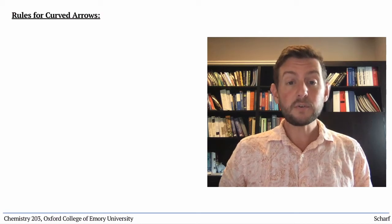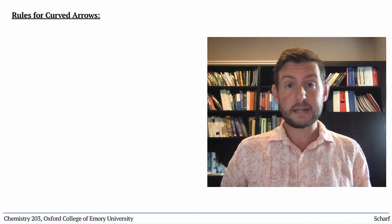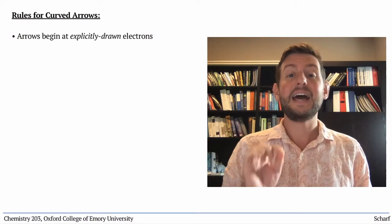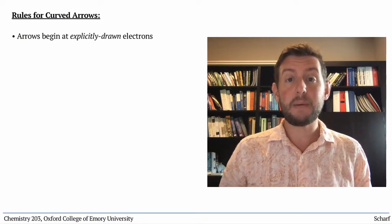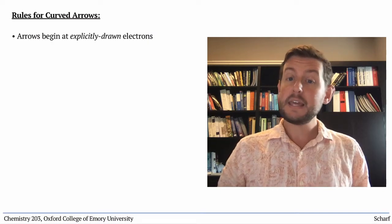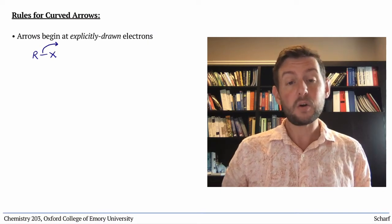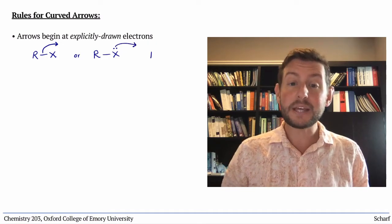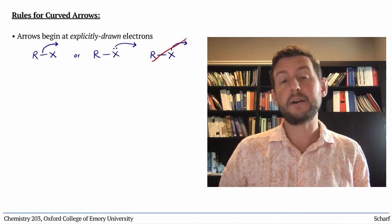There are several critical rules for curved arrow mechanisms. First, every arrow must always begin at an explicitly drawn pair of electrons. They can be either in a bond or a lone pair. Never start an arrow at an atom label unless there's a lone pair drawn on it.